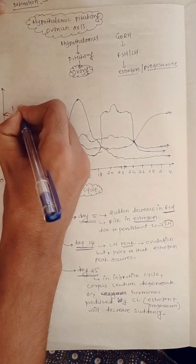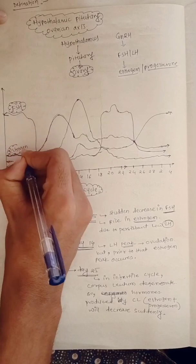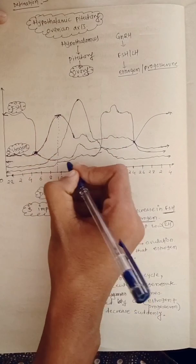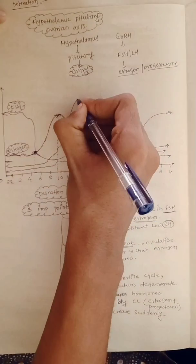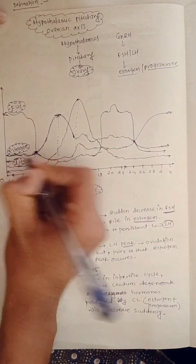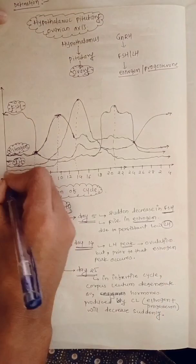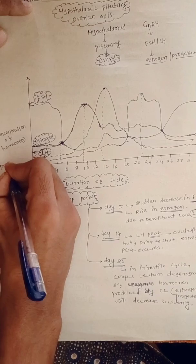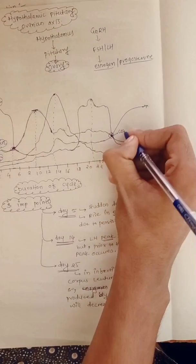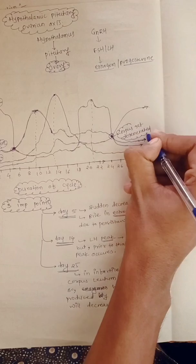To recap the four important graphs: FSH is high from day one to day five, and estrogen is low. On day five, due to continuous low LH, estrogen gets a peak, FSH comes down. After day fourteen, the LH peak triggers ovulation. The third hormone LH and the fourth hormone progesterone — the corpus luteum secretes mainly progesterone and a small amount of estrogen, so after ovulation progesterone gets a peak. Remember: FSH, estrogen, LH, and progesterone are the four hormones, and the three key days are day five, day fourteen, and day twenty-five.